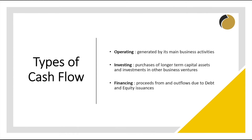So what are the different types of cash flow? A company's cash flows can be broken down into three types: operating cash flows, comprised of cash generated by its main business activities; investing cash flows, comprised of its purchases of longer-term capital assets as well as its investments in other business ventures; and financing cash flows, comprised of proceeds from and outflows due to debt and equity issuances.